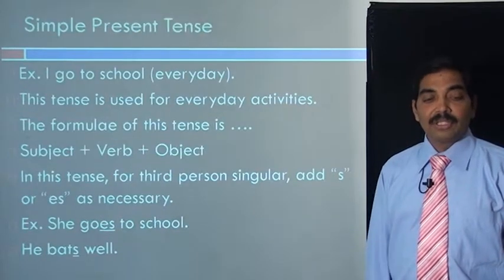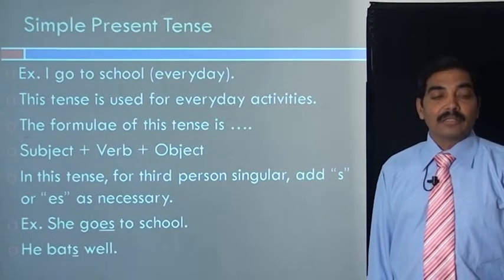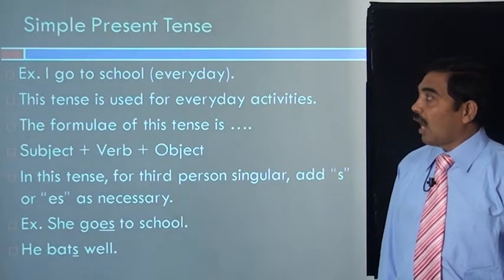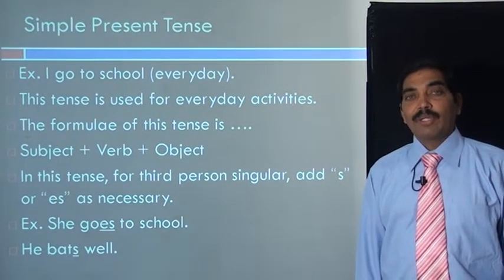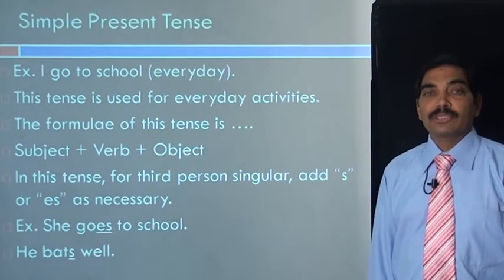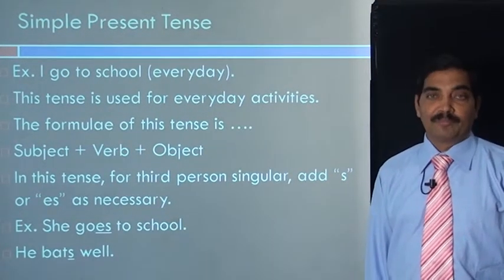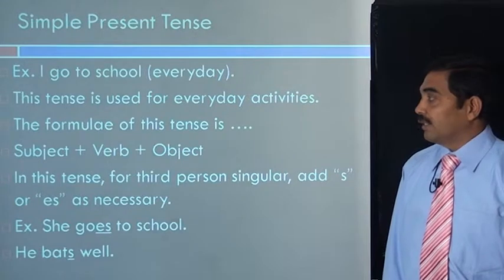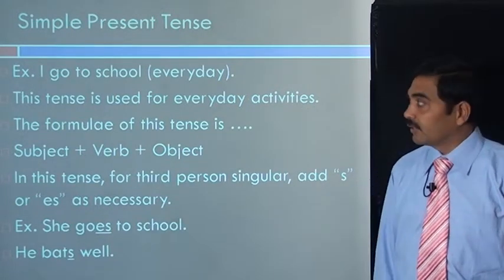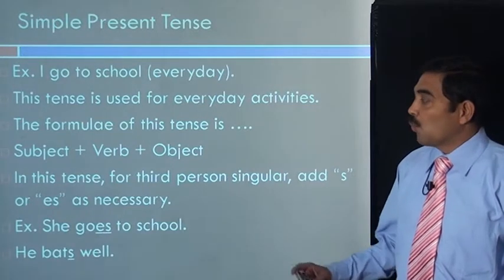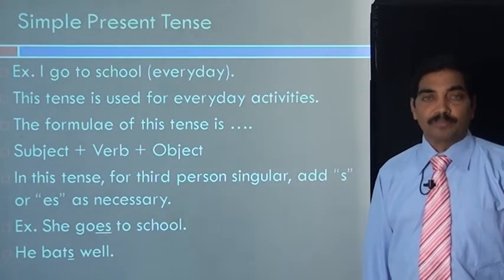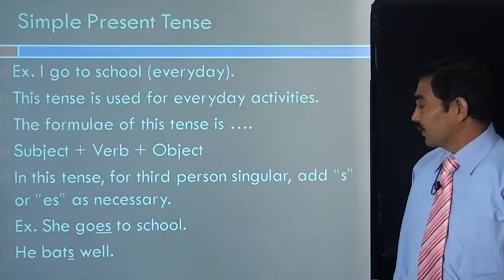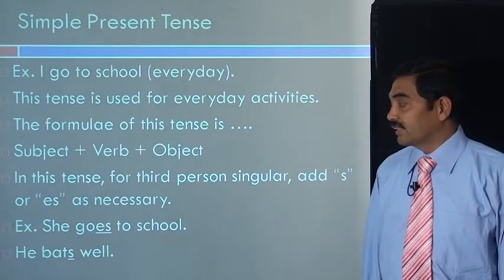Let us see the first form of the tense, that is simple present tense. Let us take an example: I go to school. When we say I go to school, it means I go to school everyday. This tense is used for everyday activities and the formula for this tense is subject — that is I — verb — that is go — and object — to school. In this tense, for third person singular, we need to add s or es as necessary.